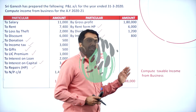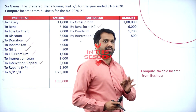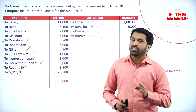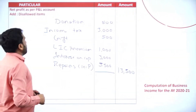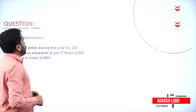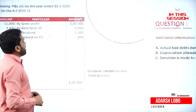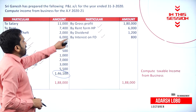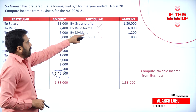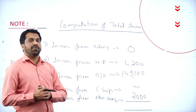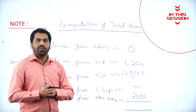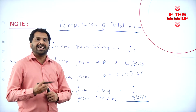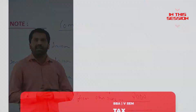As per your syllabus, you have only computation of business income. Income from house property as per the question — rent from house property. Any dividend received from an Indian company, we call it as exempted.